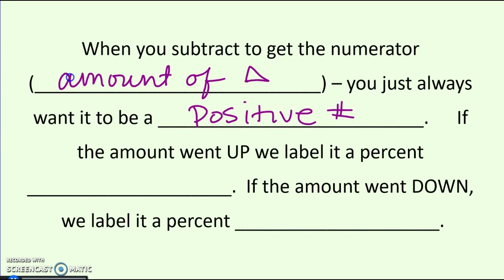Even if it went down or dropped, leave it as a positive number — just how much it changed. If that amount went up, label it as an increase; if that amount went down, label it as a percent decrease. We don't usually label it as a negative; we just say it was a decrease of that much.